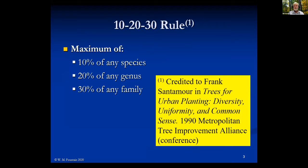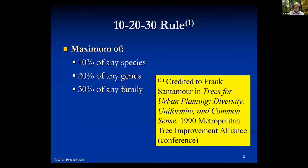The 10-20-30% rule is being credited to the late Dr. Frank Santamore, who was a geneticist with the National Arboretum. He published this as a presidium for a talk entitled 'Trees for Urban Plantings: Diversity, Uniformity, and Common Sense.' Before he passed away, Frank said he thought 10-20-30% was a little bit high, and he would have probably revised it to 10% of a genus. This is a good rule of thumb to work with.